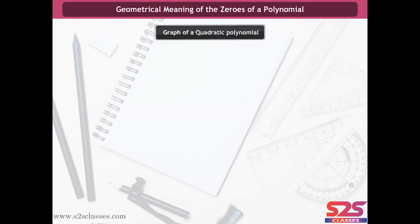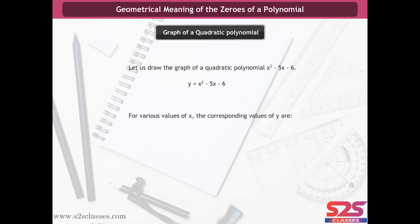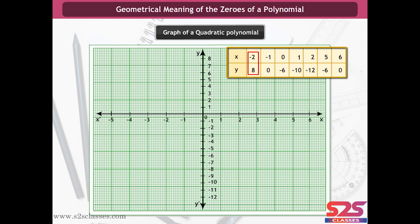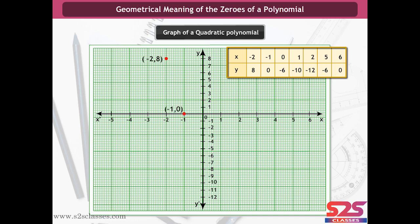Graph of a Quadratic Polynomial. Let us draw the graph of the quadratic polynomial x² - 5x - 6. Let y = x² - 5x - 6. For various values of x, the corresponding values of y are (-2, 8), (-1, 0), (0, -6), (1, -10), (2, -12), (5, -6), and (6, 0). We plot these points one by one on a graph paper and join them.